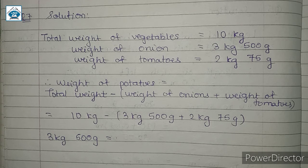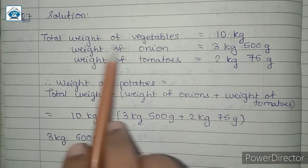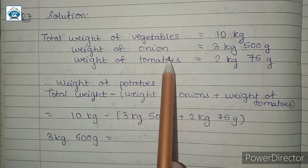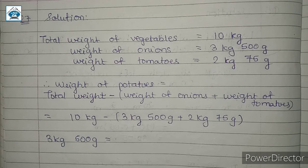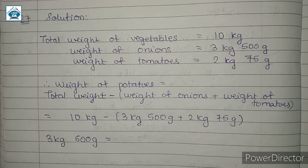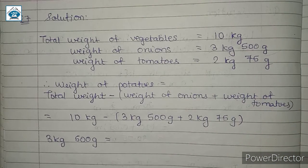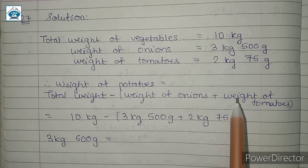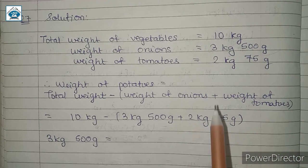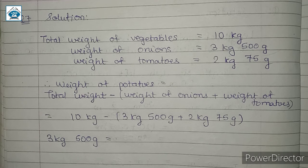We are given: Akash bought vegetables weighing 10 kg. Weight of onions is 3 kg 500 g. Weight of tomatoes is 2 kg 75 g. We need to calculate the weight of potatoes. We will add the weight of onions and tomatoes, then subtract from the total 10 kilograms to find the weight of potatoes.